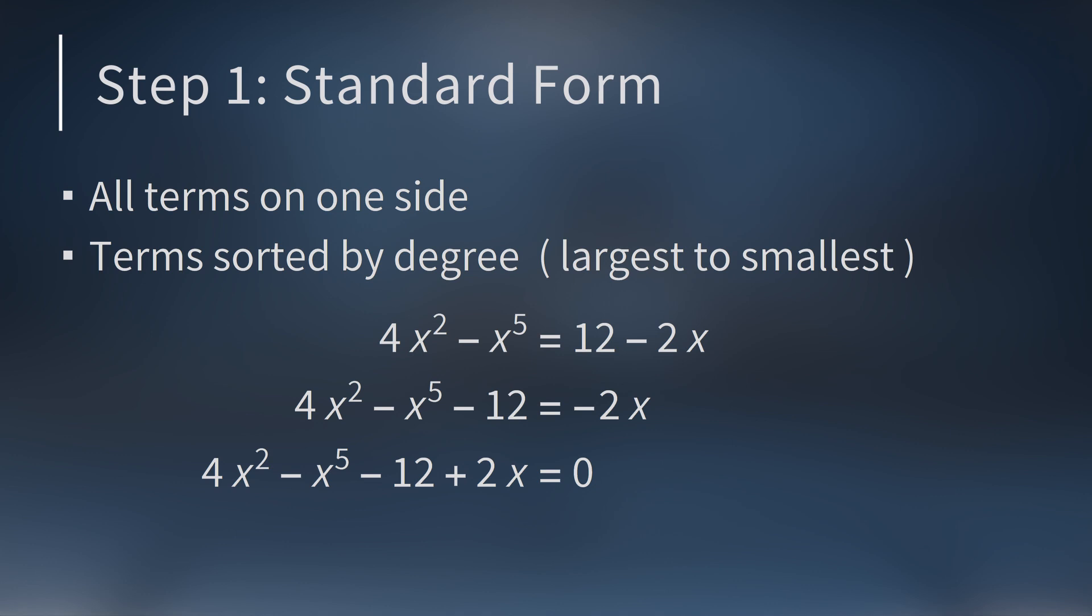Now all the terms are on one side. This is a polynomial with integer coefficients, but it's not in standard form. Remember, you write polynomials from largest degree to smallest degree. Once we do this, the largest exponent is 5, then 2, then 1, and then the constant term negative 12, which has degree 0.